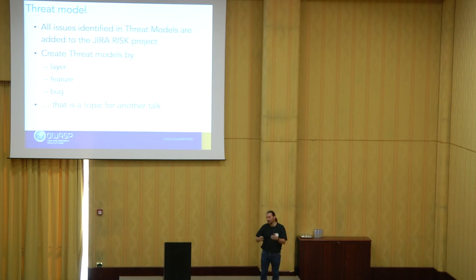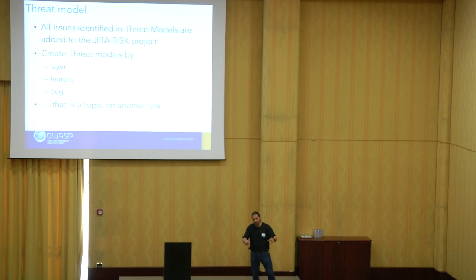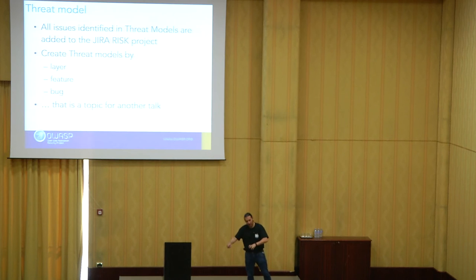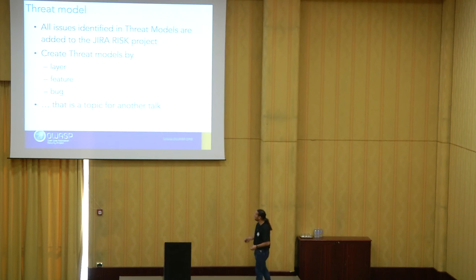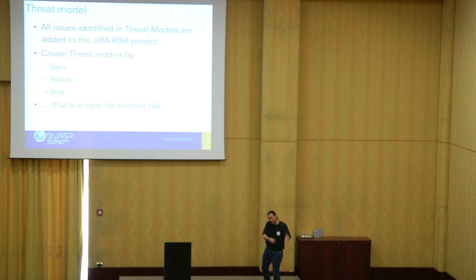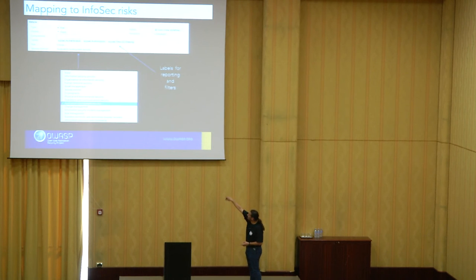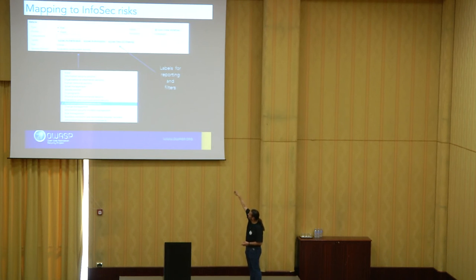Threat models are a massive area where every issue identified is added to the Jira risk project. These days I create threat models by layer, by feature, and by bug, which works really well. I sit with devs, they write the threat models, we digitalize them and come back to them. We tend to use draw.io — it saves in XML files. All the threats we find are mapped into Jira, where you can add labels and use all sorts of interesting properties.